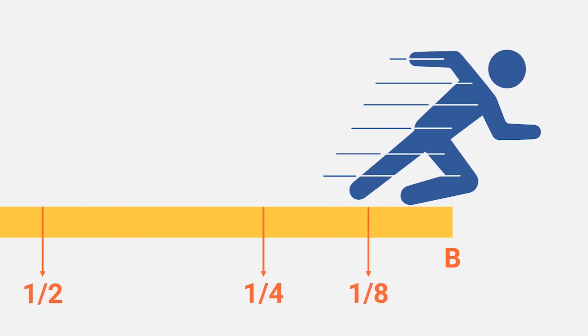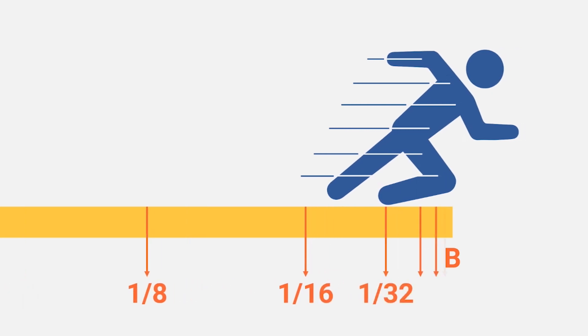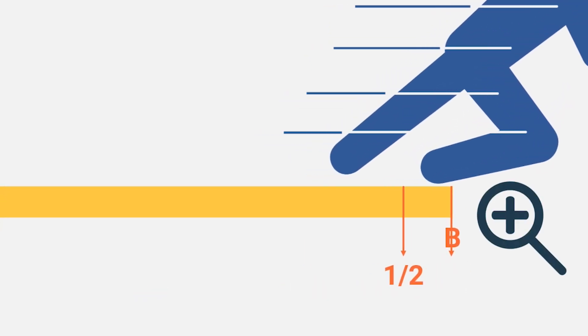And then a fourth halfway point, and a fifth, and a sixth, and a seventh. Wait, how many halfway points are there actually? Well, let me tell you. Infinitely many. But if you have to reach infinitely many halfway points before you reach point B, is it even possible to reach point B in a limited amount of time?